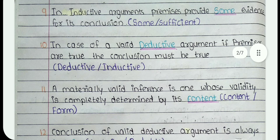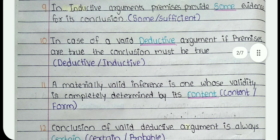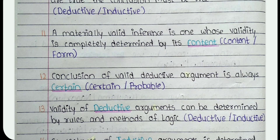10. In case of valid Dash argument, if premises are true, the conclusion must be true. The answer is Deductive. 11. A materially valid inference is one whose validity is completely determined by its Dash. The answer is Content.